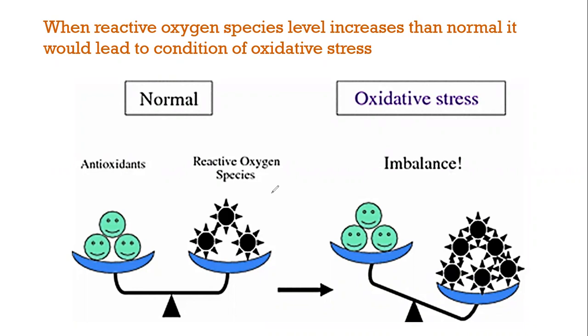In normal conditions, free radicals are produced but their level stays balanced with antioxidants. Antioxidants are chemical compounds which are necessary for body functions. Whenever the amount fluctuates, it creates imbalance, especially when reactive oxygen species levels increase.